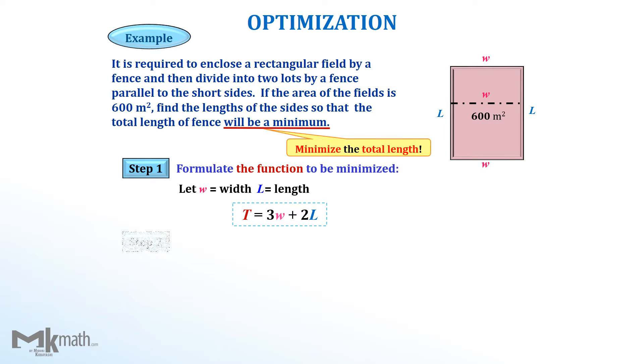Step 2, since the above total length function has two variables, we need to reduce it to one variable. To do so, we need to use some information which is the area of the field as 600 square meter.